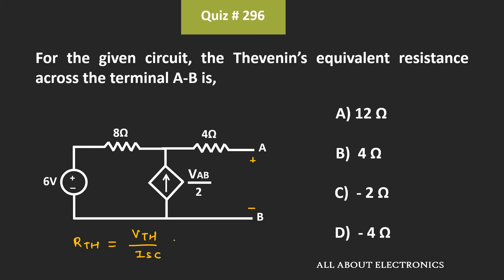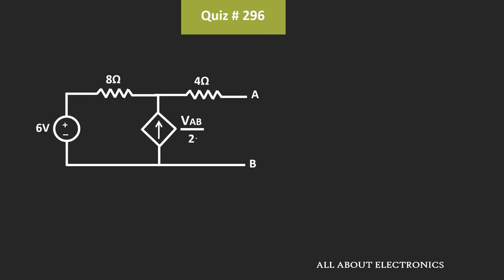Let's find the Thevenin's equivalent voltage. This Thevenin's equivalent voltage is the voltage seen across the two terminals, equal to Vth. And Vth is equal to Vab — that is the voltage across terminals A and B.